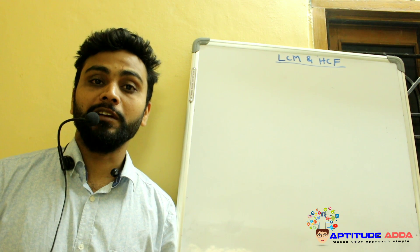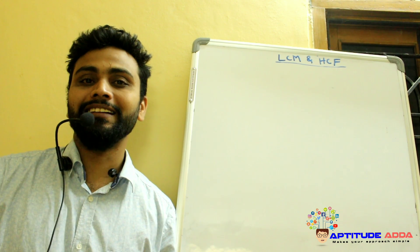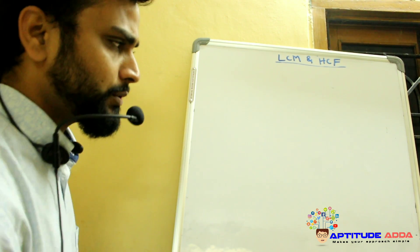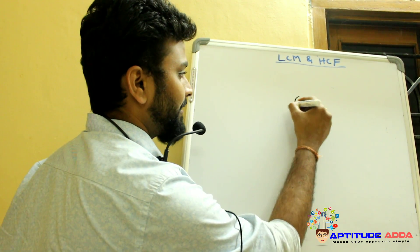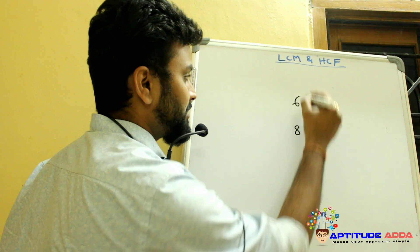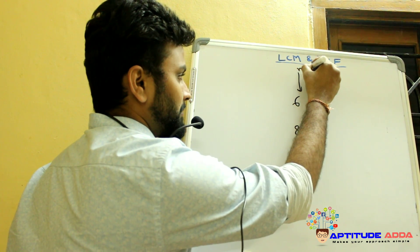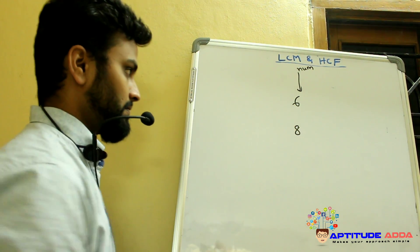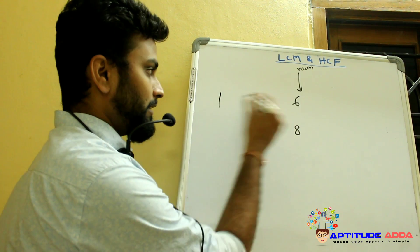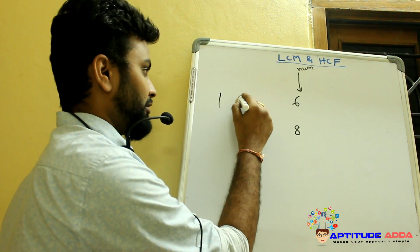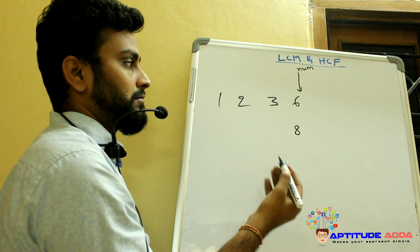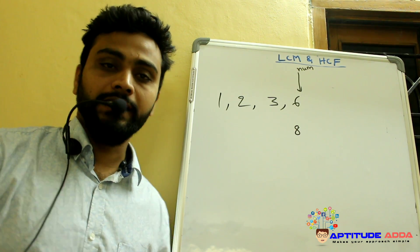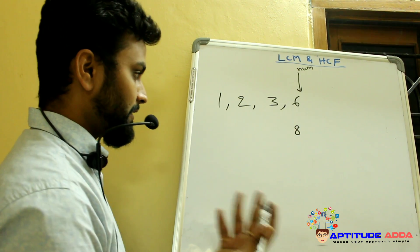I will explain the concept of LCM and HCF with an example. Let's consider two numbers, say 6 and 8. What are the factors of 6? 1 into 6 gives you 6, and 2 into 3 gives you 6. So 1, 2, 3 and 6 are factors of 6. Similarly for 8,